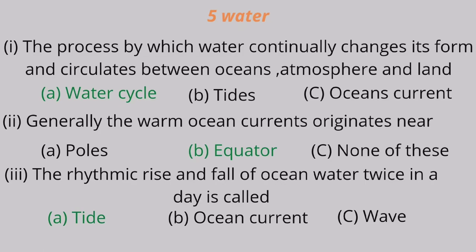Question 3: The rhythmic rise and fall of ocean water twice in a day is called A. tide, B. ocean current, C. wave. Tide is the correct answer.